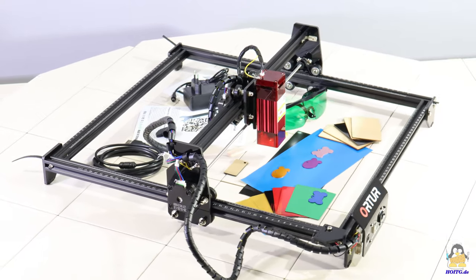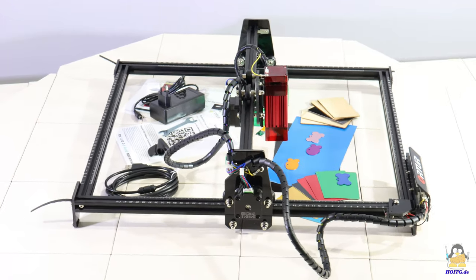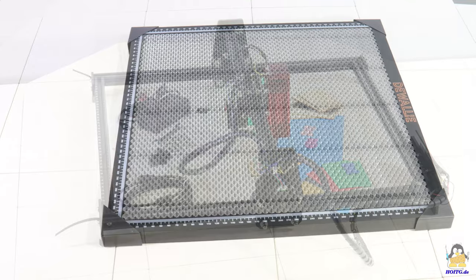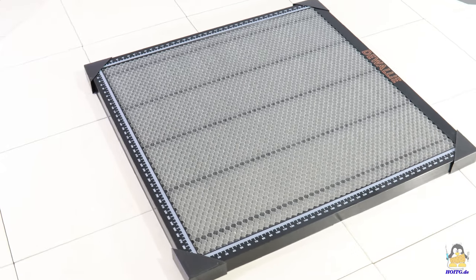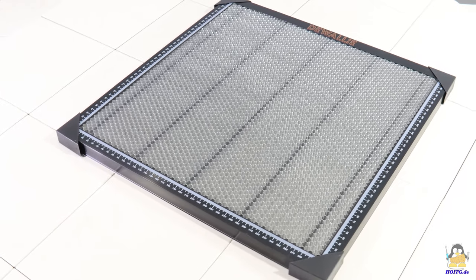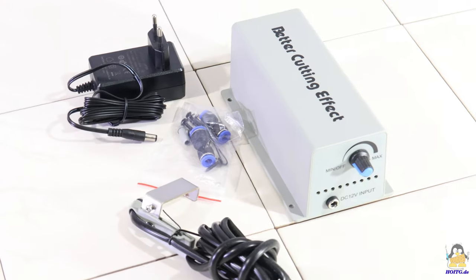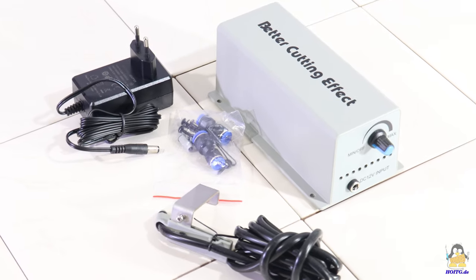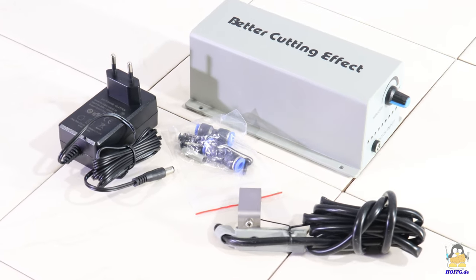As always, there are high resolution photos of the package contents on my website. In addition to various laser machines, ORTUR also offers plenty of accessories for these devices. Extras I received are a metal grid for laser cutting and an electric pump that can be used to blow a jet of air onto the surface for better results.